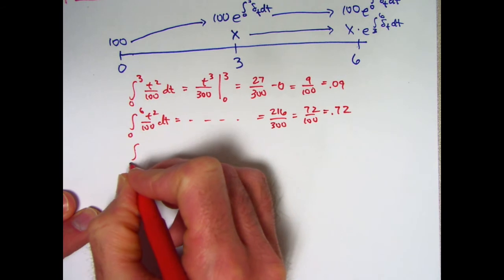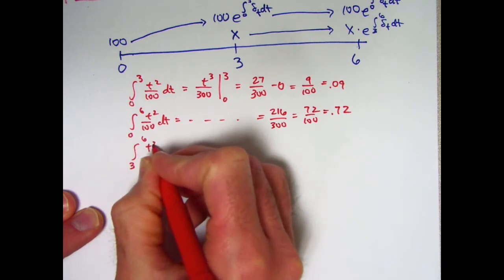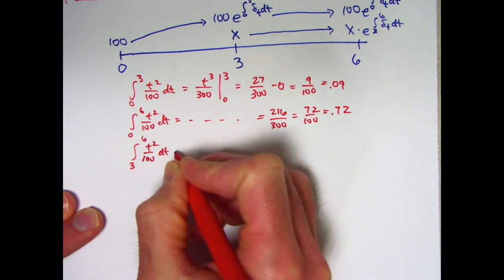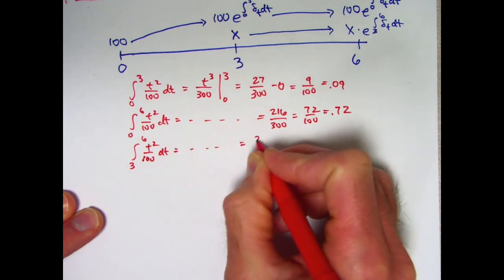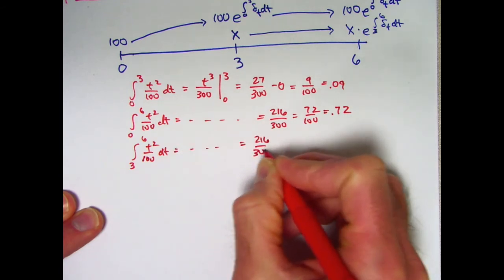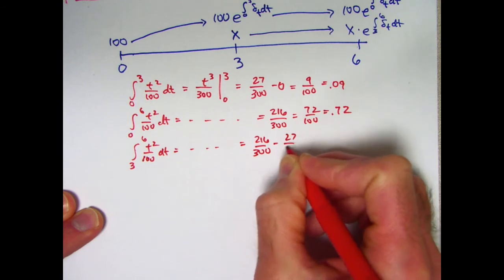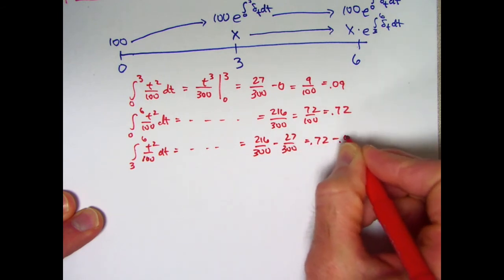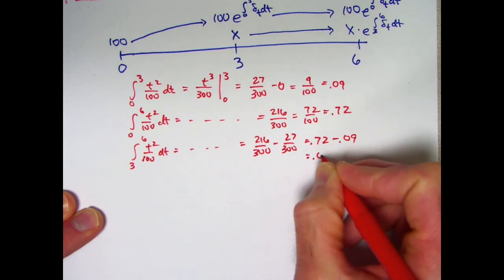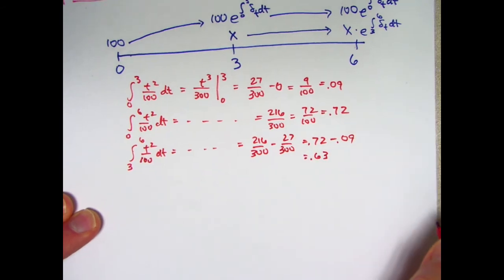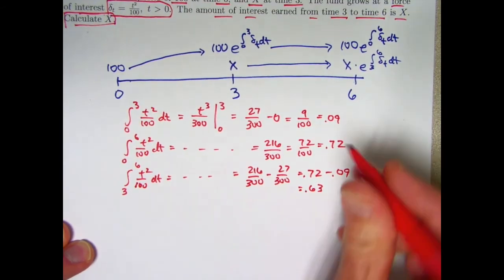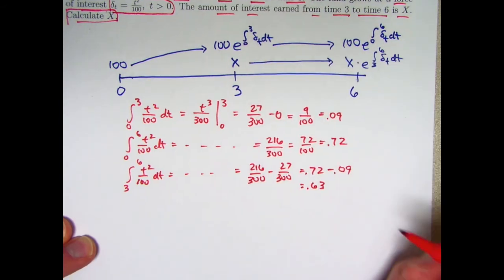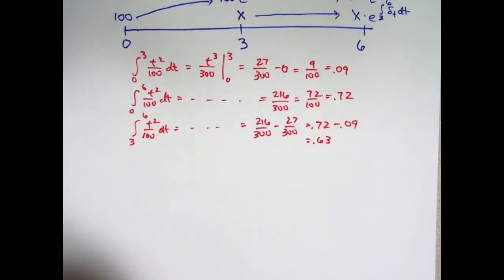The integral from 3 to 6 is going to give you 216 over 300 minus 27 over 300, or if you prefer 0.72 minus 0.09, it equals 0.63. I need to exponentiate those things. I've got e to those integrals. Let's use a different color. We'll use our calculator here.